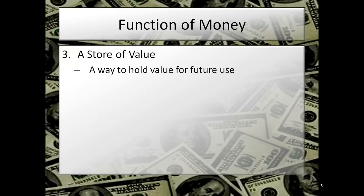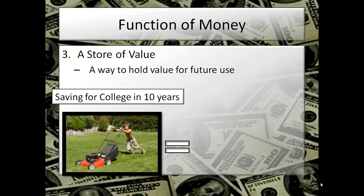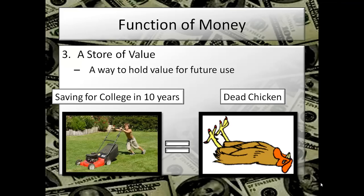The third function of money is it has to store value. If Charlie works today mowing lawns and wants to save that value for 10 years to help with college, the money he gets paid has to hold its value. If he's paid in chickens, he has dead chickens in 10 years — and that has no value. Some people, if they're smart about investing, hold the value of money for decades. Some families have old money that's been around for centuries. So we need money to hold its value.